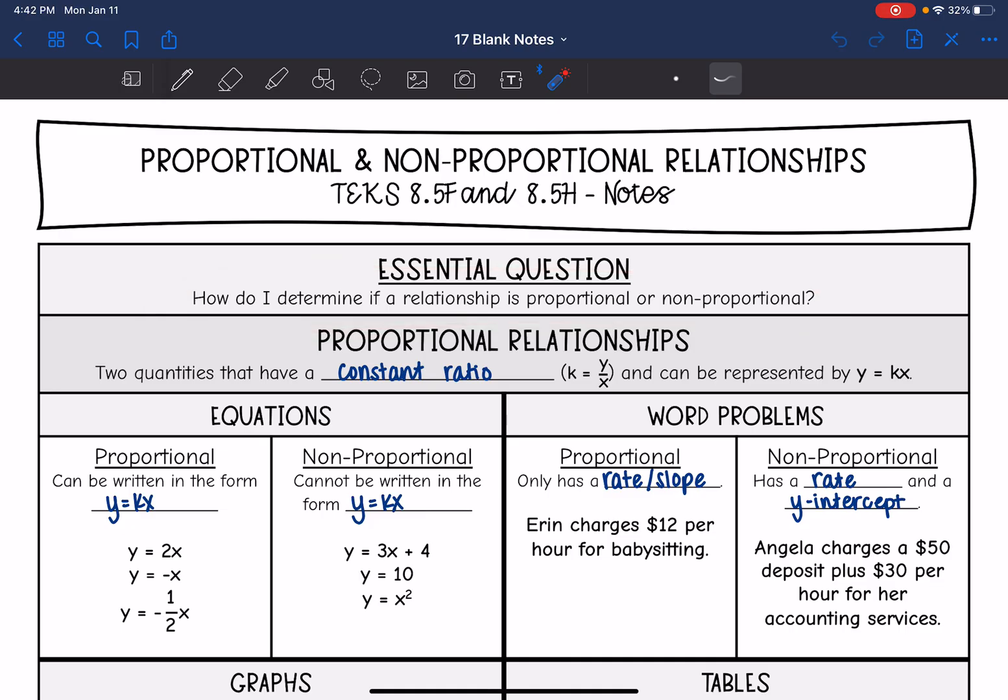Proportional relationships are special because not only does the slope formula work, but they also have this constant ratio, which means whenever you do y divided by x, it is constant throughout the whole relationship. That's why they use the letter k - you can think of it, it has the same sound as constant, and it can be represented by y equals kx.